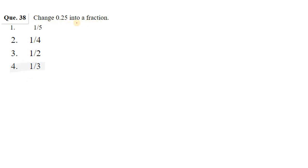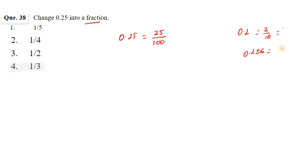Change 0.25 into a fraction. We write 0.25 as 25/100, then cancel: 25/100 simplifies to 1/4. So 0.25 as a fraction is 1/4.